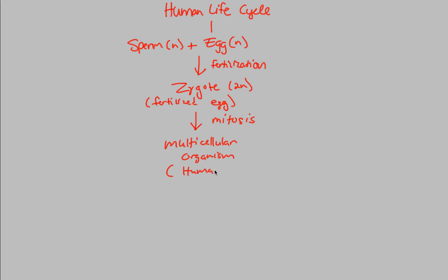That's when we've created a human completely — a multicellular organism. But now this is a life cycle, so we have to somehow cycle back to the sperm and egg. And that's what we'll do utilizing meiosis.